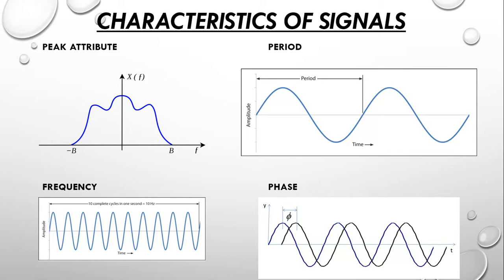Period refers to the time a signal takes to complete a pattern in a given time frame. Repeating over identical subsequent intervals, completing one full pattern is called a cycle. In simple terms, period is the time needed to complete a full cycle. Frequency is the number of completed cycles per second, measured in hertz (Hz).